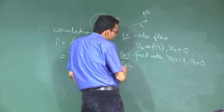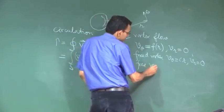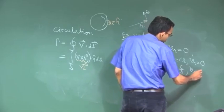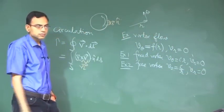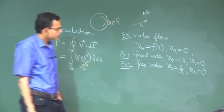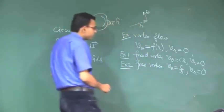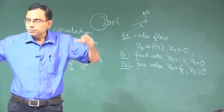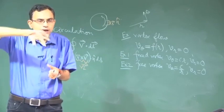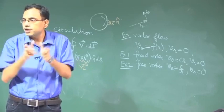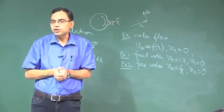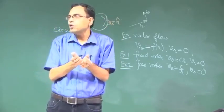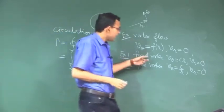The second example is called the free vortex. How do you get a forced vortex physically? You take a cylindrical cup, fill it partially with fluid, and rotate it with respect to its axis. You can generate the forced vortex, and you know from earlier experience that the corresponding shape of the free surface is like a paraboloid of revolution — that is the forced vortex.